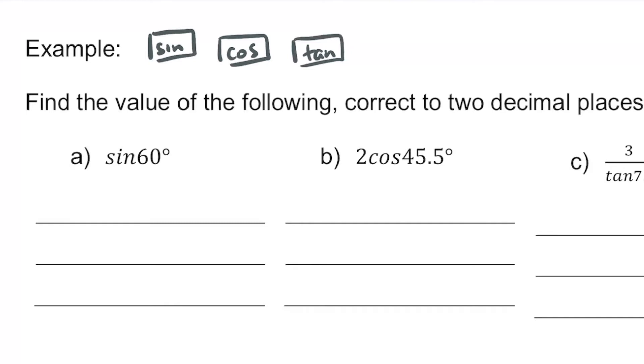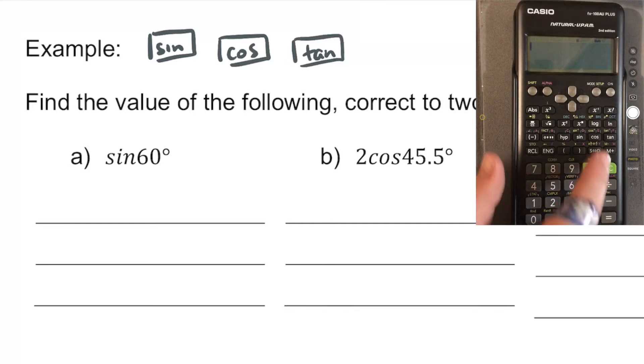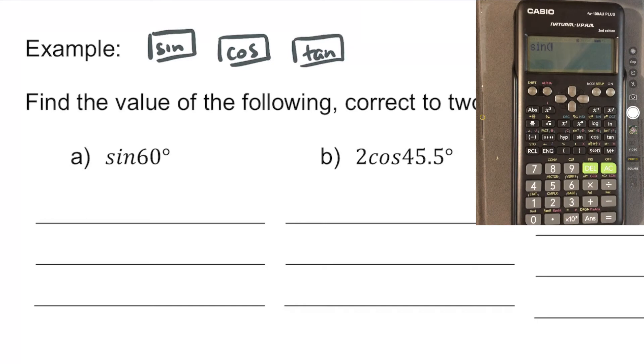Our first example is sine of 60 degrees. These examples come from the Cambridge Mathematics Standard One textbook. We go straight to our calculator, find the button of sine, and then we type in sine 60 degrees and hit equals. We should get something looking a little bit like this.